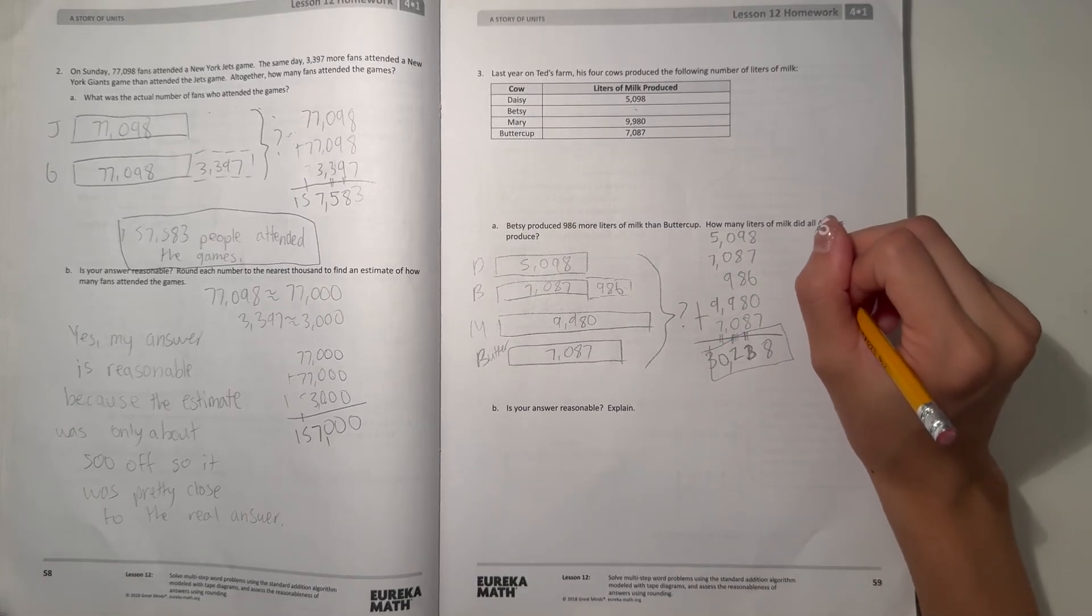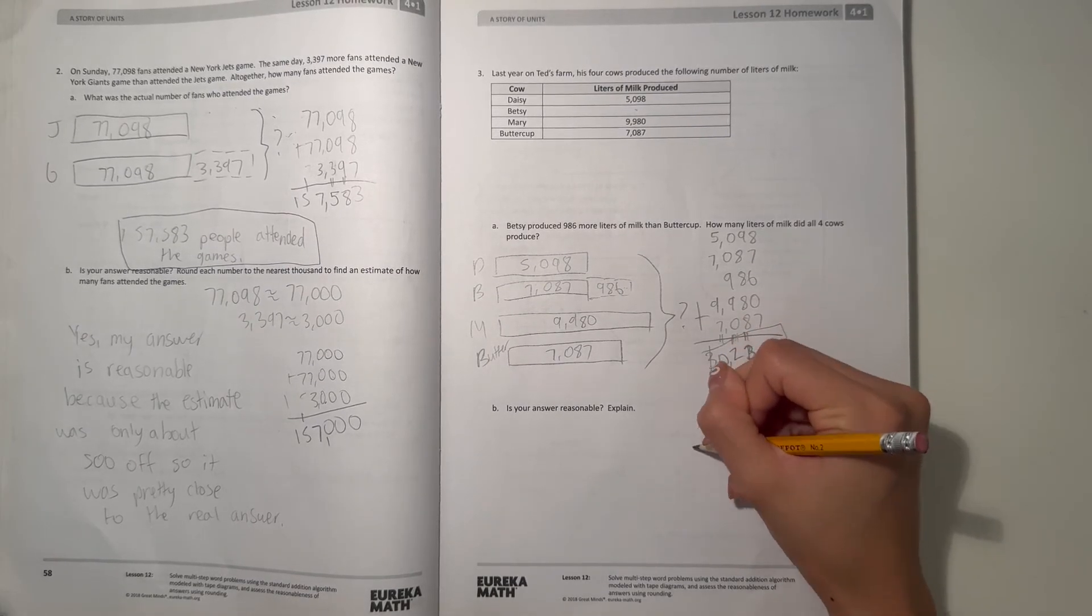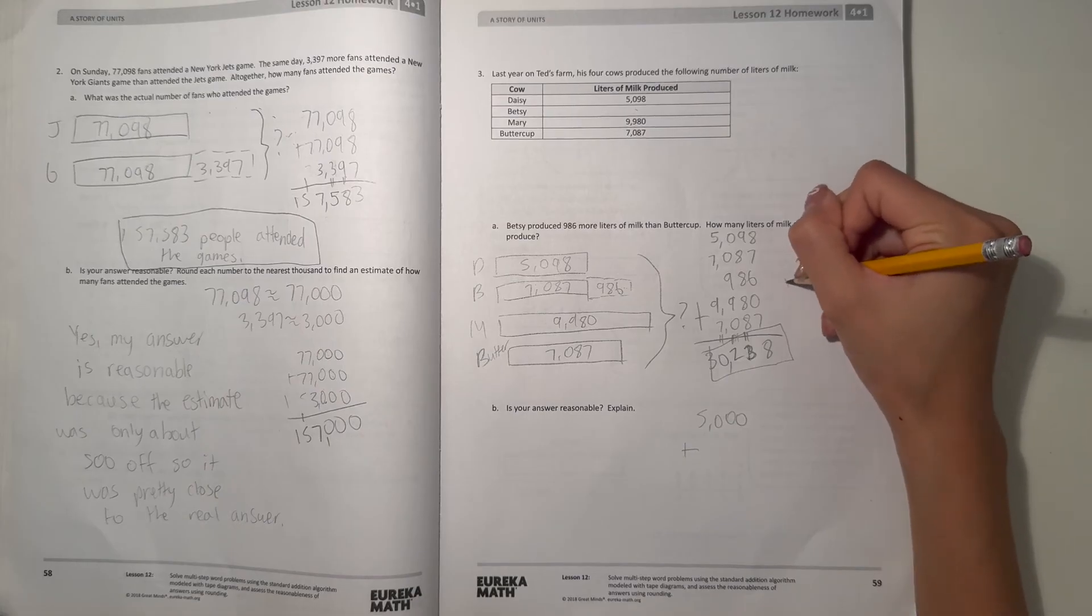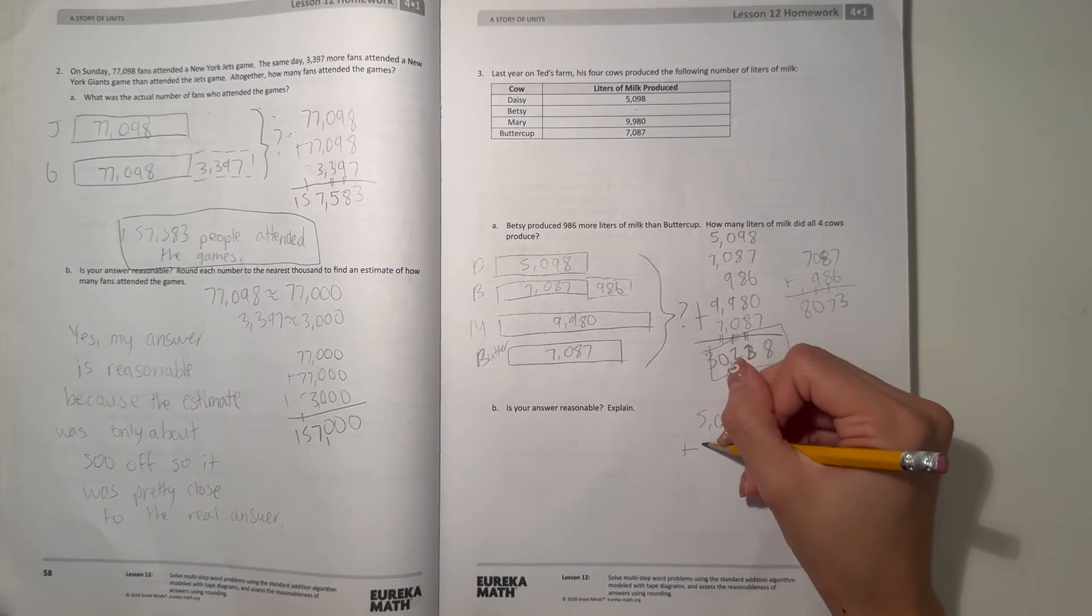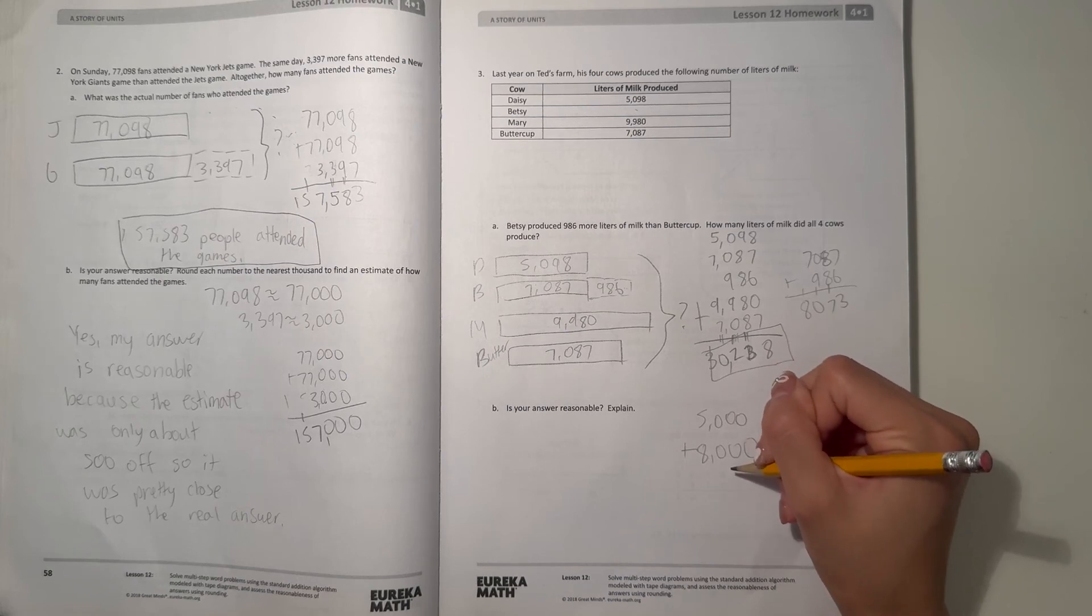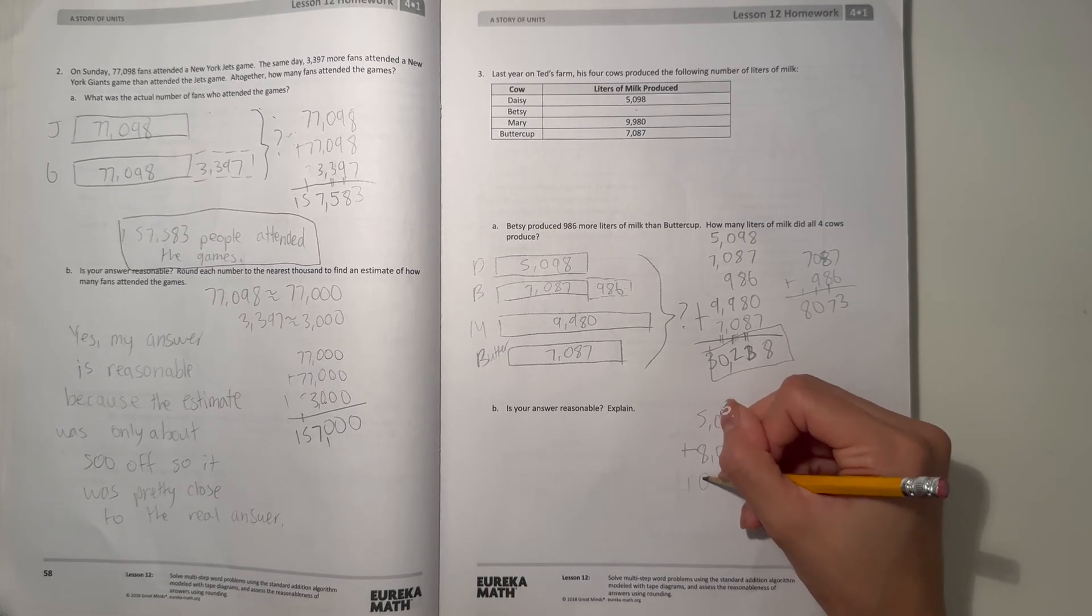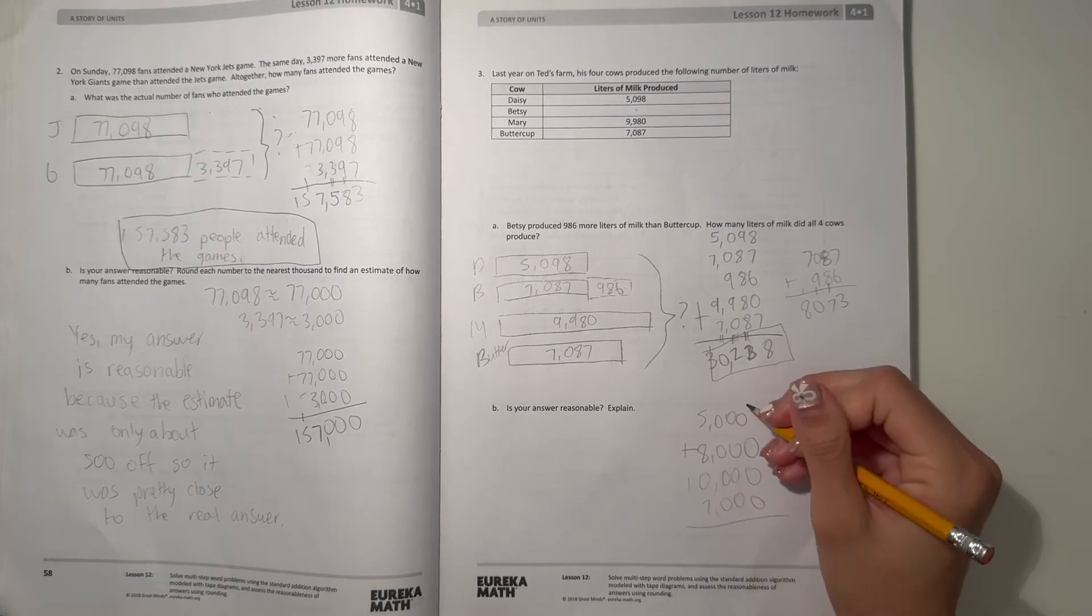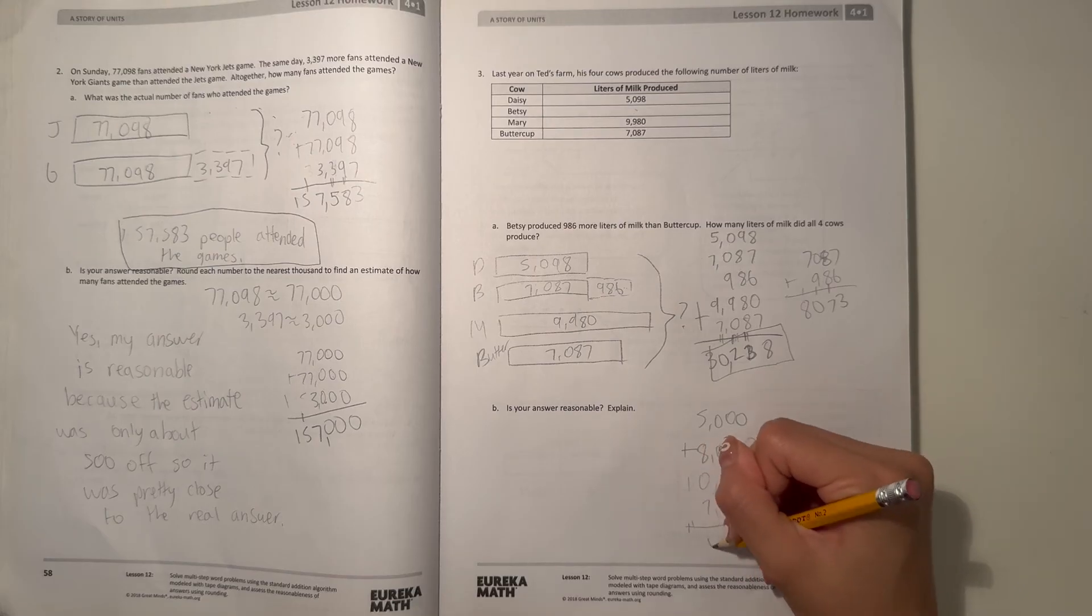So is our answer reasonable? Let's try rounding it. 5,098 we round to 5,000. Buttercup, we actually never found out how much Betsy really was. Let's do a quick math here. Betsy would be around 8,000 pretty much. And Mary would be around 10,000. And Buttercup would be around 7,000. So let's add them all up. 5 plus 8 plus 0 plus 7, that would be 20. So our answer is 30,000 for our estimate.